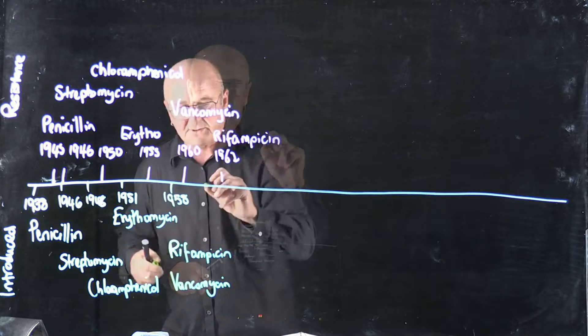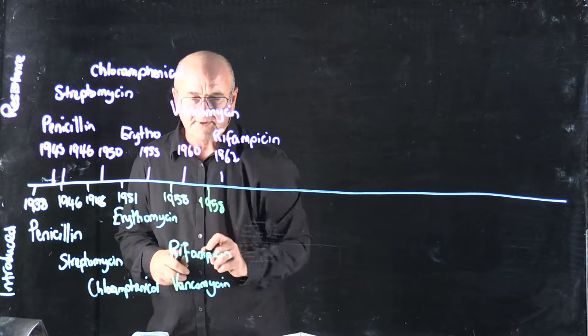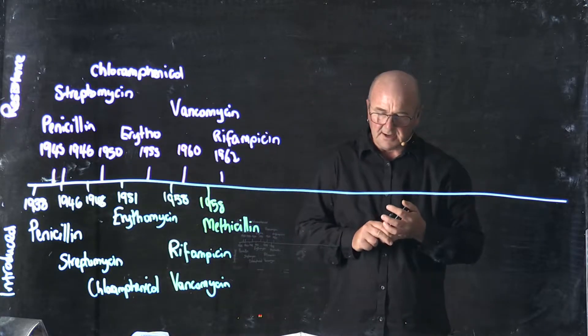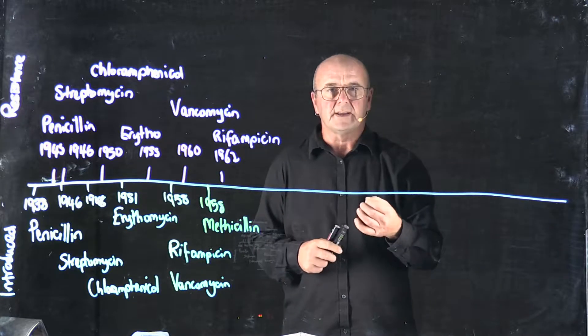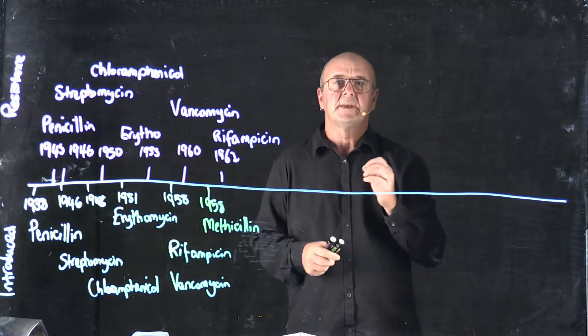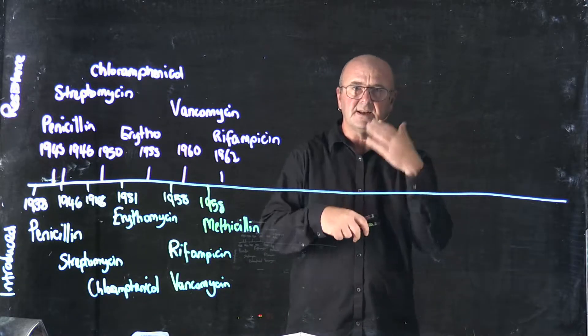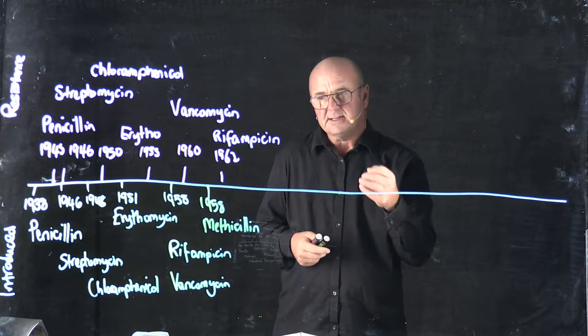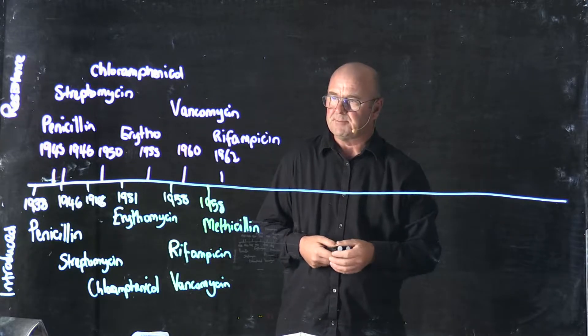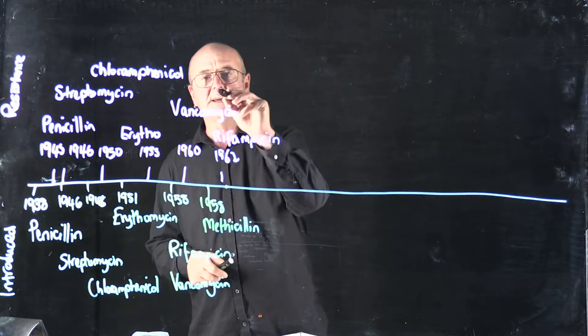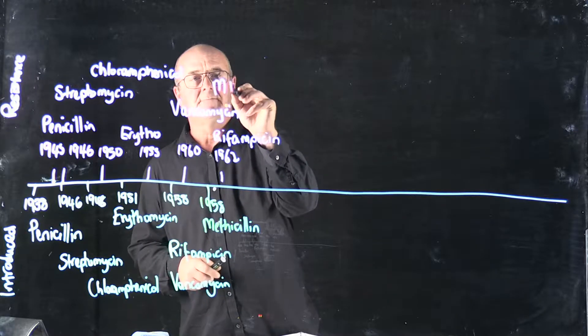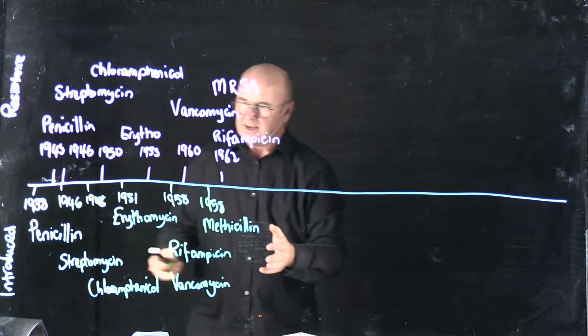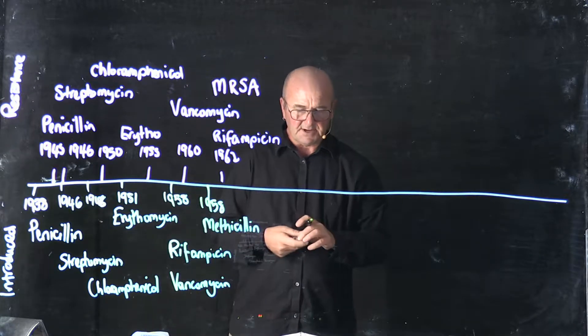And then one more that we introduced in 1958. We introduced methicillin. And methicillin is really an important drug in the fight against a bacteria called Staph aureus. Staph aureus is a common bacteria. It's on our skin, in our noses. Everybody has it. But occasionally, Staph aureus can go really bad. And in 1962, again, we identified methicillin-resistant Staph aureus, MRSA.